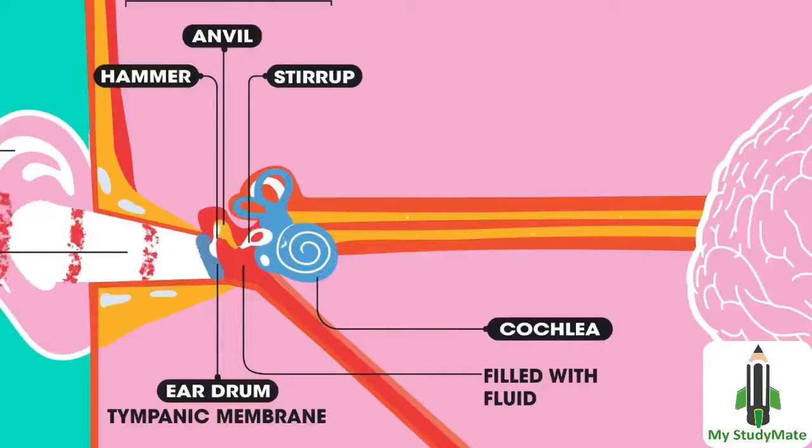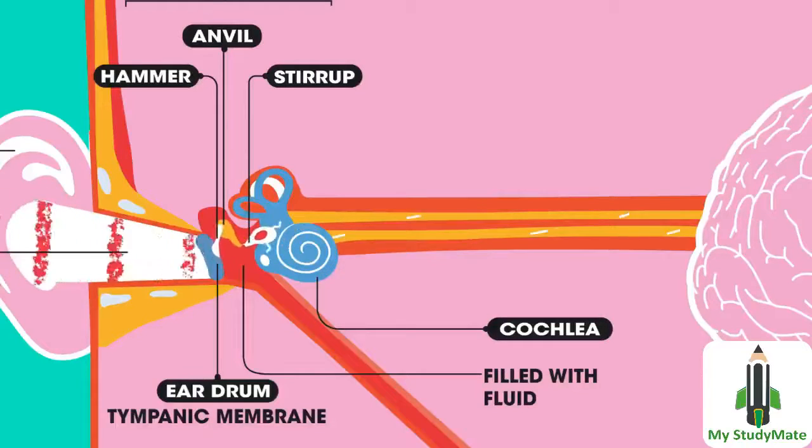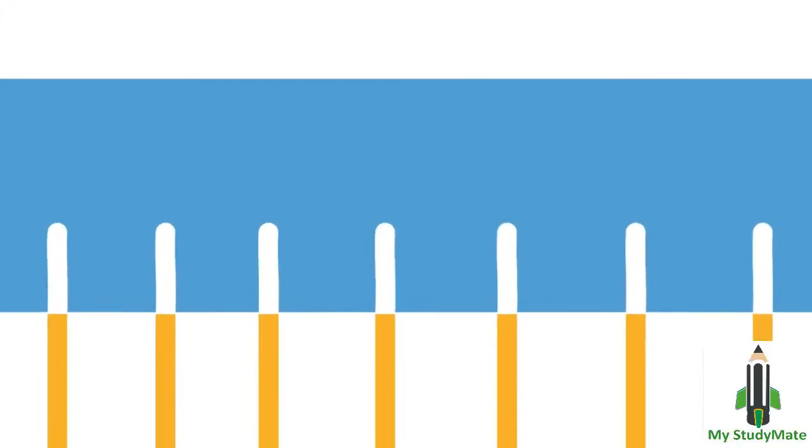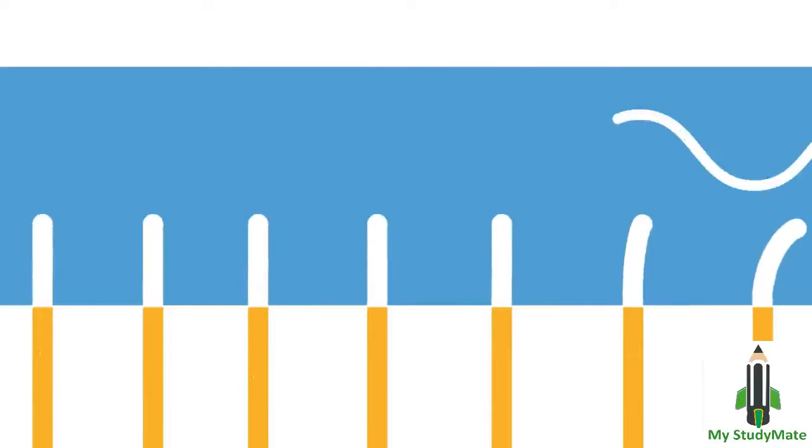The vibrations pass through the fluid inside the cochlea. It is inside the cochlea that the sound waves are transferred from vibrations into electrical impulses. When the fluid inside the cochlea vibrates, this causes microscopic hairs to also move.